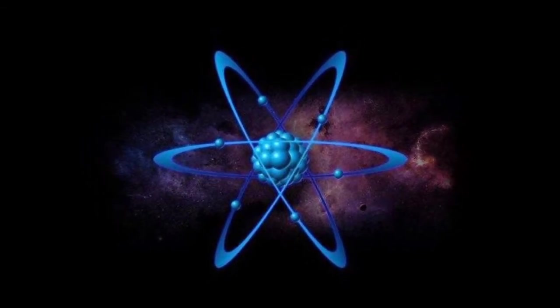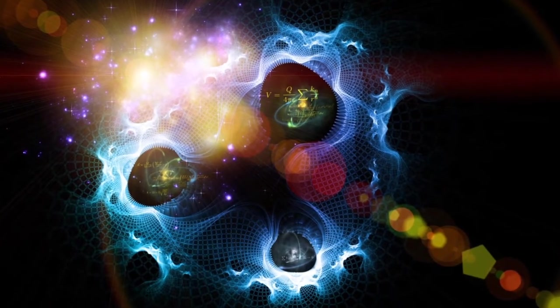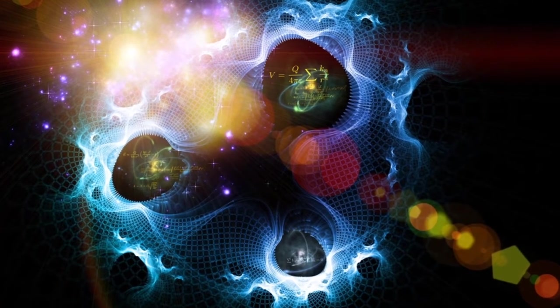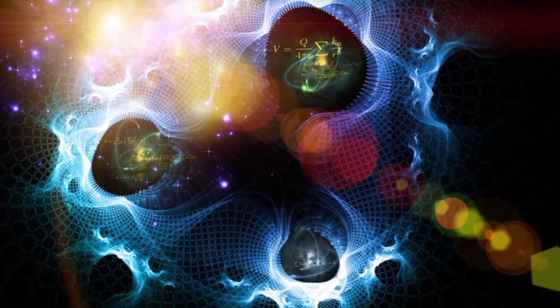This theory states that every electron in the universe is actually one particle that continually travels backward and forward through time. There is a lot of complicated math involved, but it does solve some of quantum physics' biggest unanswerable questions.